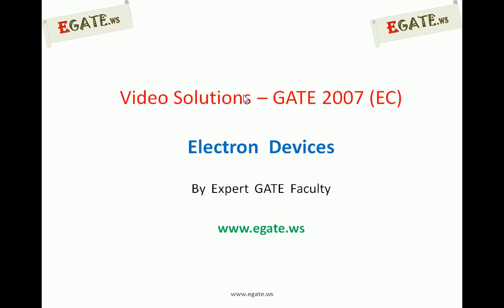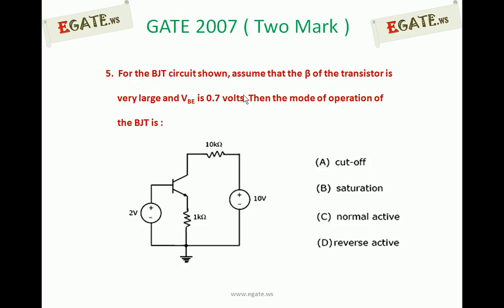Hello, we are discussing the Gate 2007 ECE paper and the topic is Electron Devices. This is the 5th two-mark question, which came in 2007.